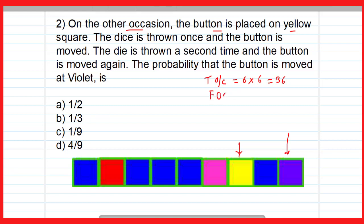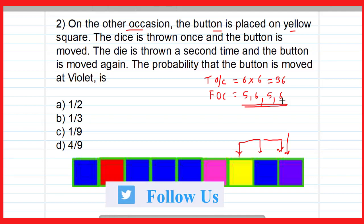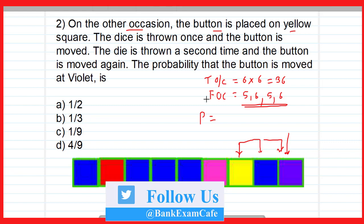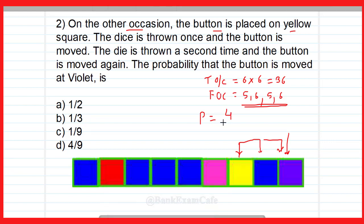Now we find the favorable outcome. Movement to the left is not favorable. So in the first throw it should turn up 5 or 6, and in the second throw it should also turn up 5 or 6. Therefore the total favorable outcomes are 2 × 2 = 4. The probability is 4/36 = 1/9. So option C is the correct answer.